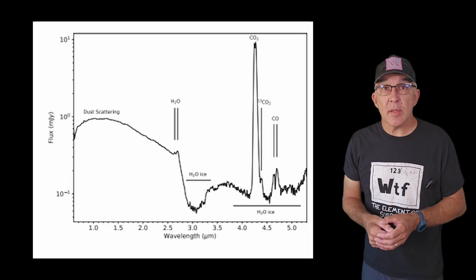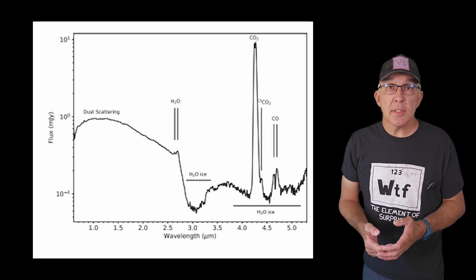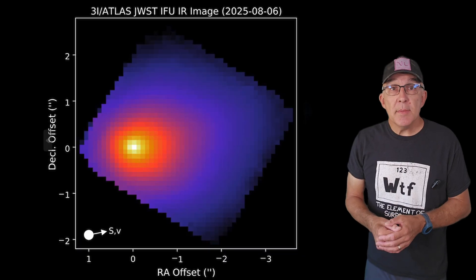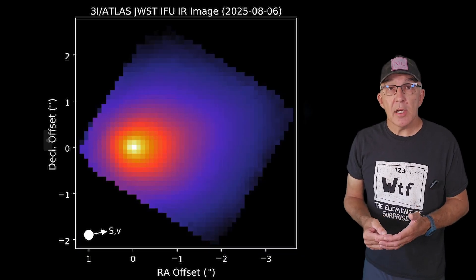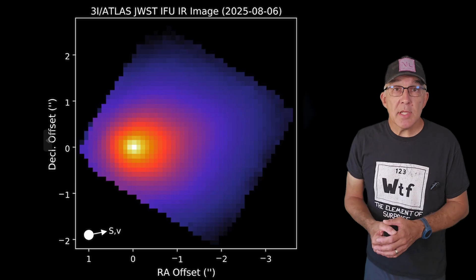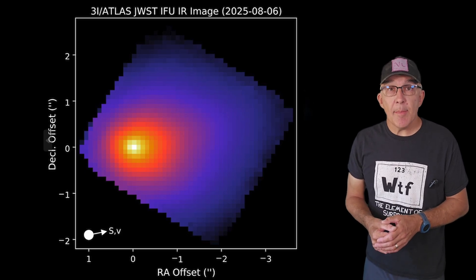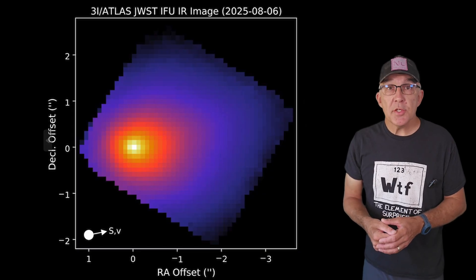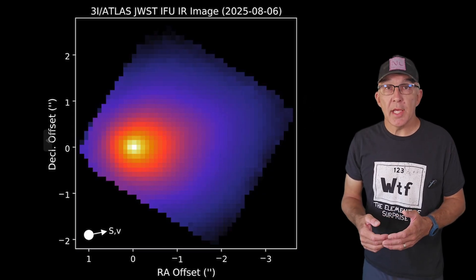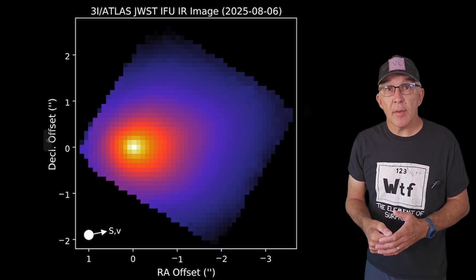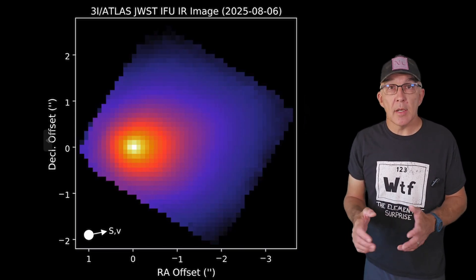JWST also detected the presence of water, carbon monoxide, carbonyl sulfide, water ice and dust. The team did report a very high carbon dioxide to water mixing ratio among the highest ever seen. This mixing ratio essentially expresses how much carbon dioxide the comet is outgassing compared to how much water. The mixing ratio can also vary over time and location in the solar system, but the ratio for 3I is high compared to other comets, although not completely crazy.